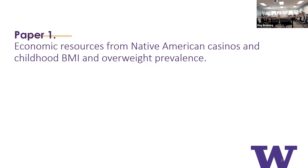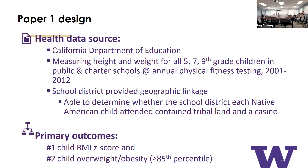In our first paper, we're looking at whether economic resources from Native American casinos are associated with — or impact — childhood BMI and overweight prevalence. The health data comes from those annual fitness tests for fifth, seventh, and ninth graders. An important note about California is that most tribes are small, so few have tribal high schools, meaning most kids attend public or charter schools where this BMI data was collected.